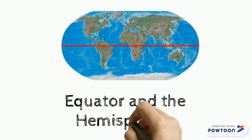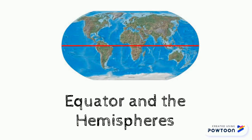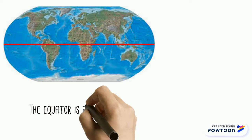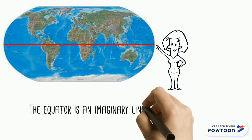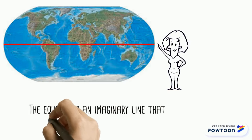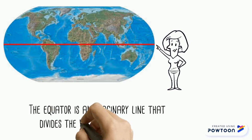Welcome, explorers. Today we are going to be learning about the equator and the hemispheres of our world. The equator is an imaginary line that divides the world into two parts.